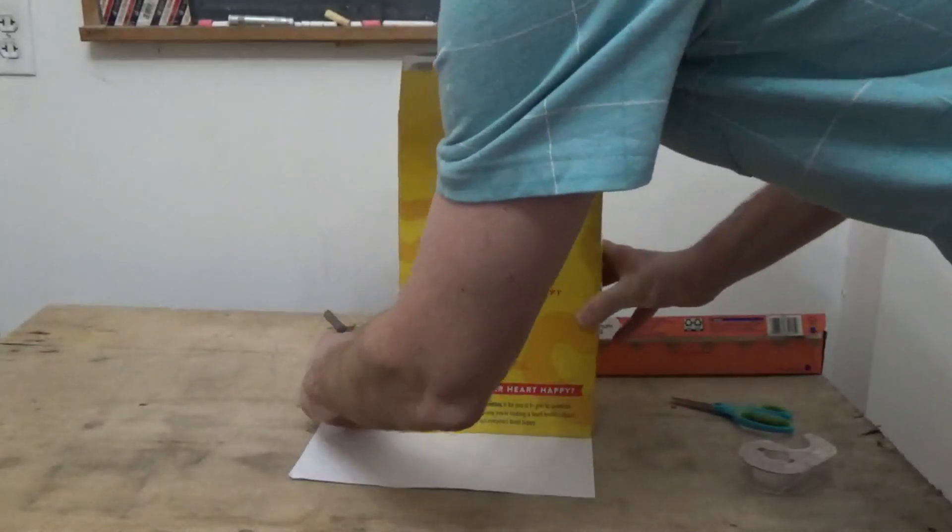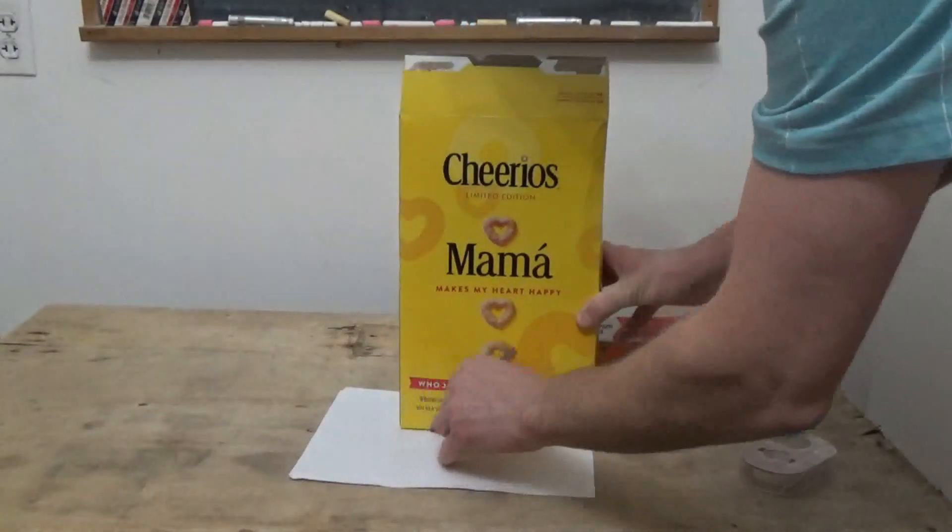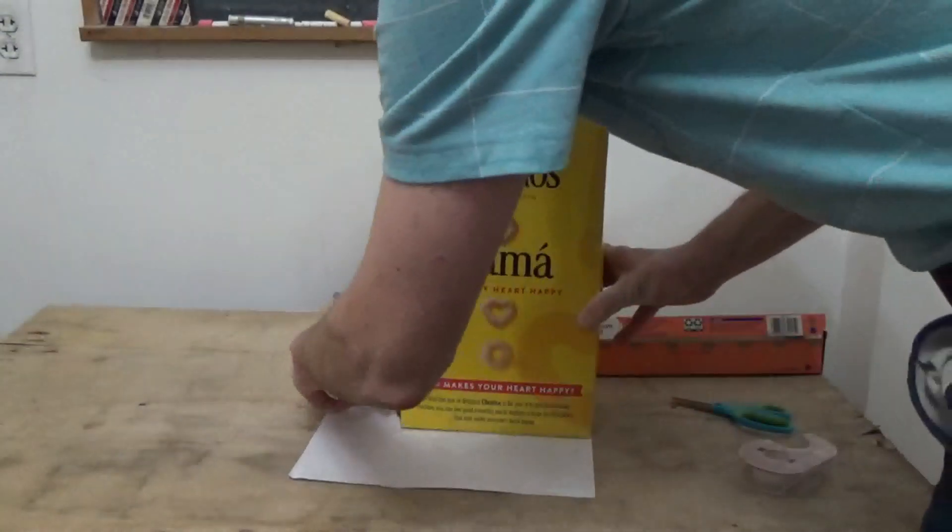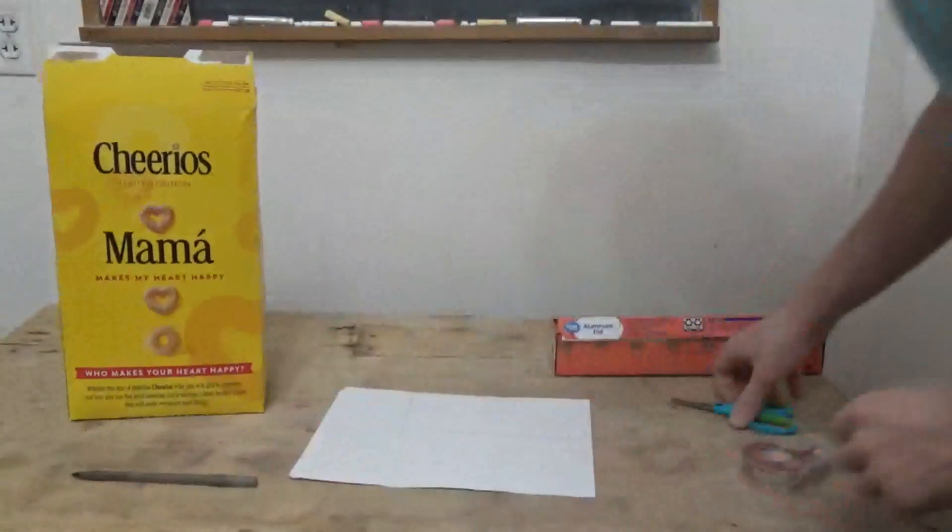The first thing we're going to do is take the white piece of paper, set the box on top of it, and trace the outline of the bottom of the box.